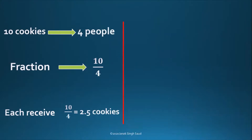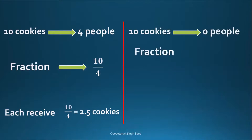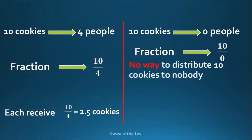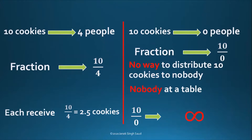For dividing by 0, what is the number of cookies that each person receives when 10 cookies are equally distributed among 0 people at a table? Written as a fraction, it is 10 by 0. There is no way to distribute 10 cookies to nobody, because there is nobody at the table to receive the cookies. So 10 by 0 is said to be either meaningless or undefined. It is not possible, it is not allowed.